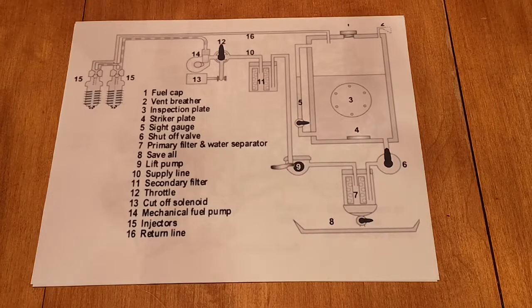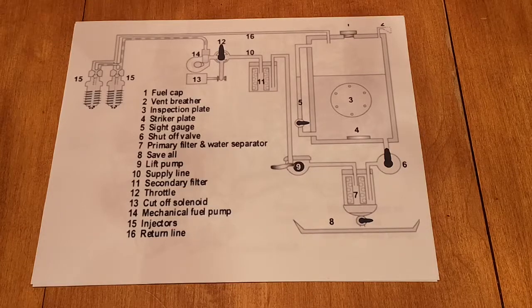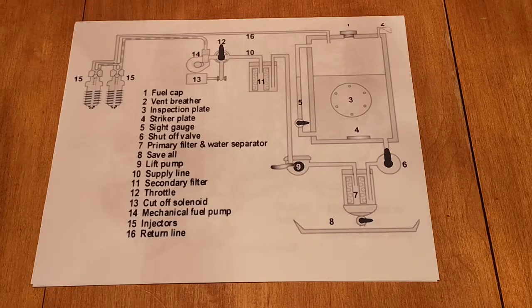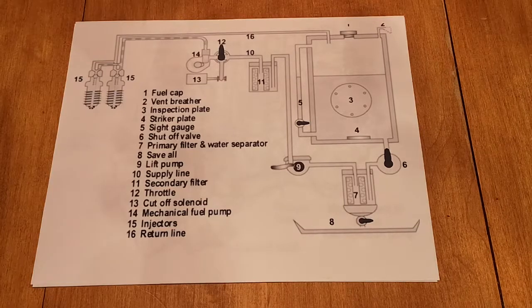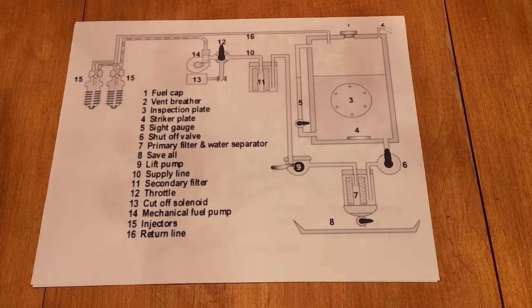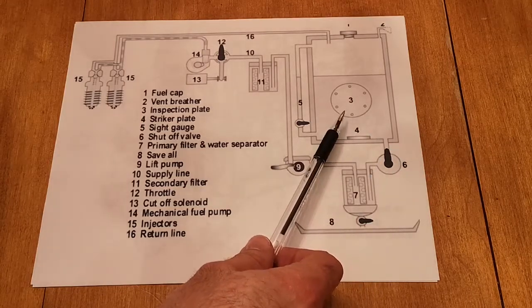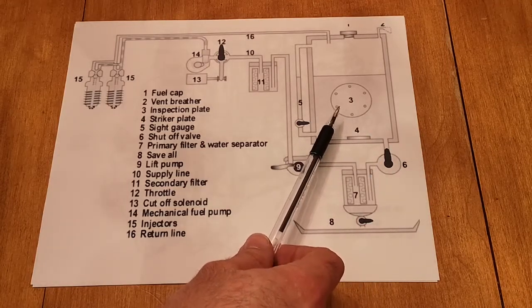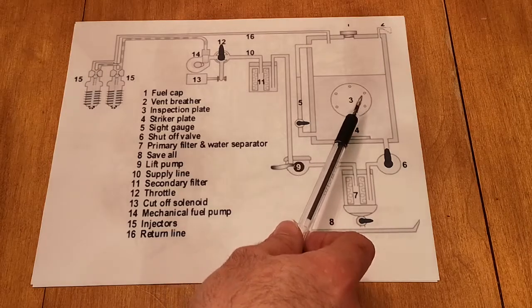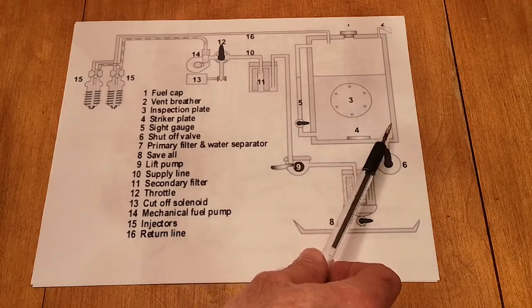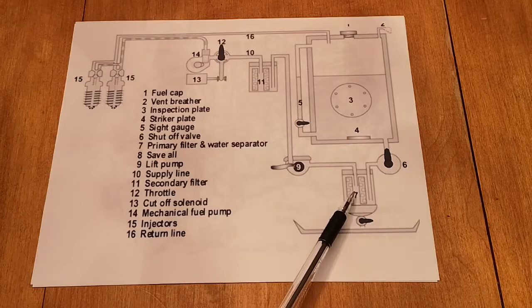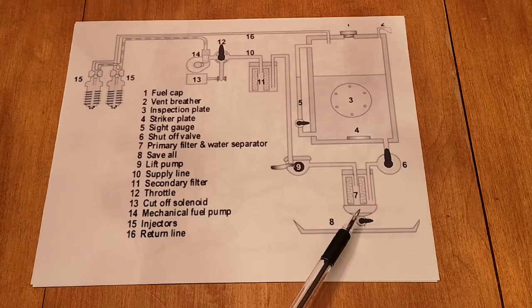The diagram you have in front of you is from a marine fuel system, so some of the stuff doesn't really apply to on-road vehicles or construction vehicles, so I'll just be pointing out the main parts. The fuel starts at the fuel tank. From there, it gets sucked through the primary filter, which also contains a water separator.